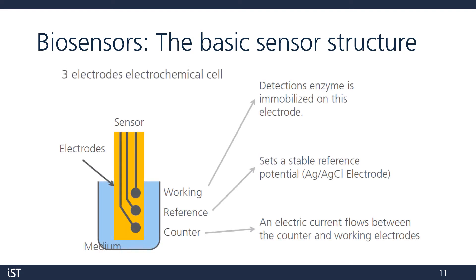Now, let's take a look at a typical enzymatic biosensor. Here we have a simplified version of the IV-4 strip type sensor from YOLPS Technologies. There are different variations of biosensors which we'll discuss, but almost all of them rely on this measurement principle. The three key components are the working electrode, the reference electrode, and the counter electrode. The enzyme is deposited and immobilized on top of the working electrode. The reference electrode sets a stable reference potential, and an electrical current flows between the counter electrode and the working electrode.